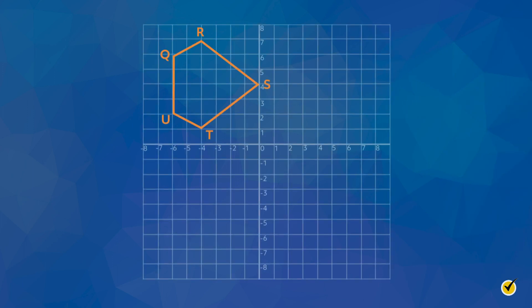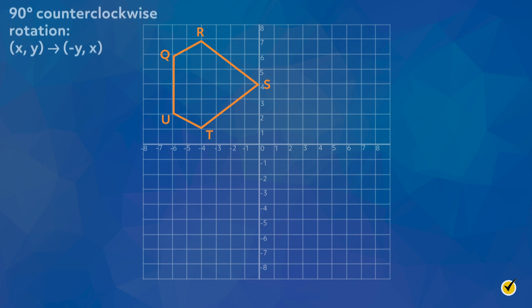Let's look at another problem. Pentagon Q, R, S, T, U is shown on the coordinate grid. Rotate the pentagon QRSTU 90 degrees counterclockwise to create the pentagon Q', R', S', T', U'. Let's start by finding the coordinates of the vertices of our original pentagon. The rule for 90 degree counterclockwise rotation is (x, y) becomes (-y, x). Let's apply the rule to find the vertices of our new pentagon.